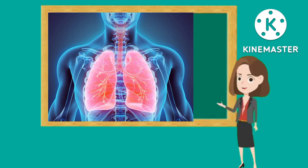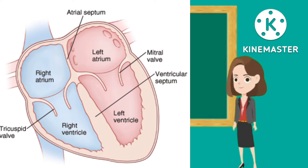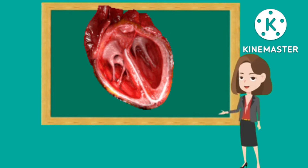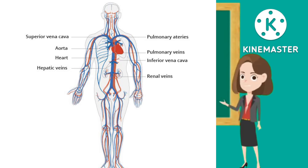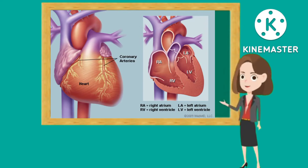The left atrium receives oxygenated blood from the lungs and pumps it to the left ventricle. The left ventricle, the strongest chamber, pumps oxygen-rich blood to the rest of the body. The left ventricle's vigorous contractions create our blood pressure.